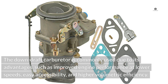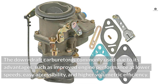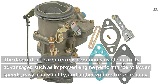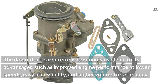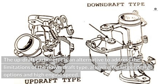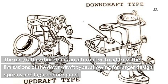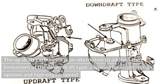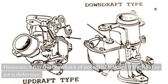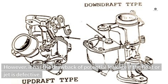Downdraft carburetor: The downdraft carburetor is commonly used due to its advantages, such as improved engine performance at lower speeds, easy accessibility, and higher volumetric efficiency. The updraft carburetor is an alternative that addresses the limitations of the downdraft type, allowing for larger design options and high engine speed. However, it has the drawback of potential leakage if the float or jet is defective.